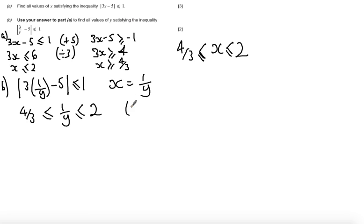If I take the reciprocal of both sides, that means that we're going to get 3 quarters. Because I've taken the reciprocal I'm going to reverse the inequalities, is greater than or equal to y, and this is then going to be reversing the inequality, greater than or equal to the reciprocal which is a half.